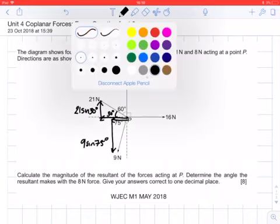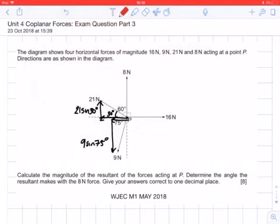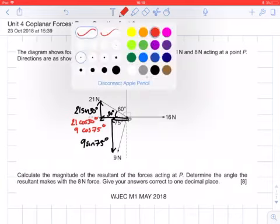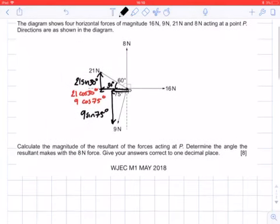Then I'm going to have two horizontal components which are going to be difficult to fit in, so I'll write them above each other to the left. That's 21 cos 30 degrees in the horizontal, and 9 cos 75 degrees in the horizontal. The 8 and 16 are both acting in the horizontal and vertical as it stands anyway, so we don't need to do anything with those.